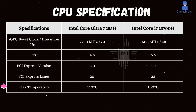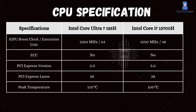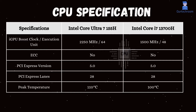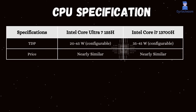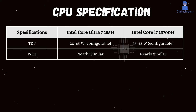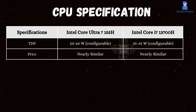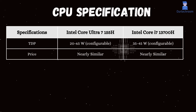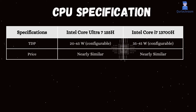The maximum temperature of the Intel Core Ultra 7 155H is higher, allowing it to withstand slightly higher temperatures than the Intel Core i7-13700H. The TDP of the Core Ultra 7 155H is lower than that of the Core i7-13700H, meaning the Ultra 7 155H consumes less power. Additionally, their prices are nearly the same.